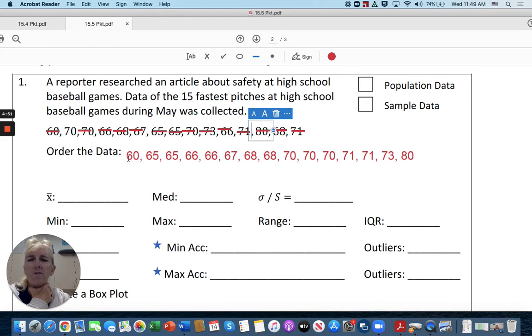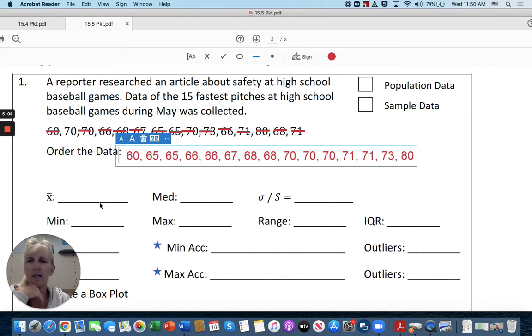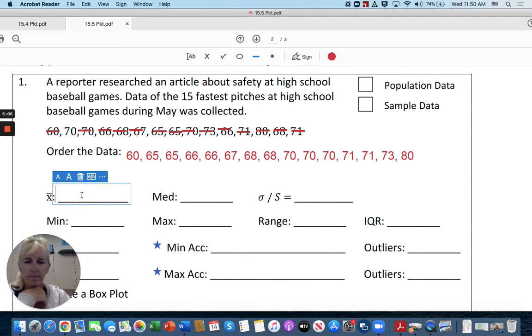So if we have 15, one, two, three, four, five, six, seven. And one, two, three, four, five, six, seven. The middle numbers are going to be right here. 68. Oh, whoops. That would be over here. The median.